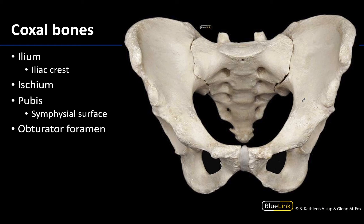We are looking at the pelvic girdle in a similar view to what we saw in the previous station. Just to get our bearings: here is the sacrum, here is the coccyx, and then you are looking at the two coxal bones right here.